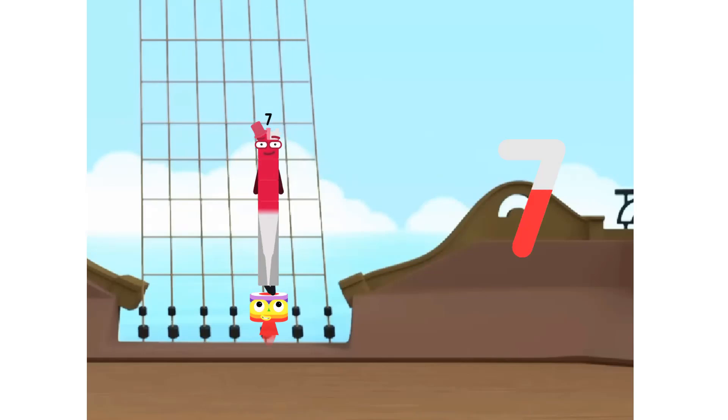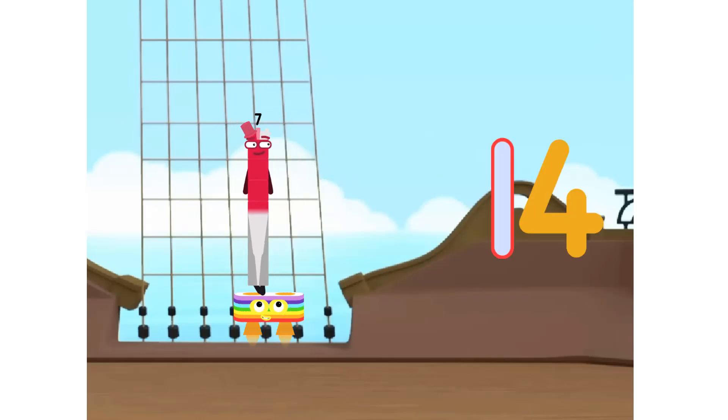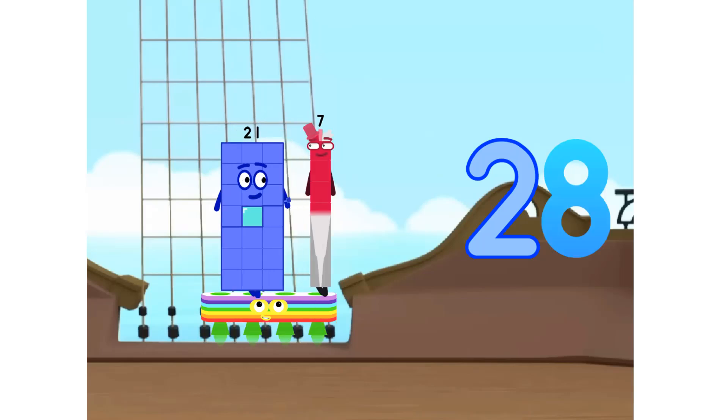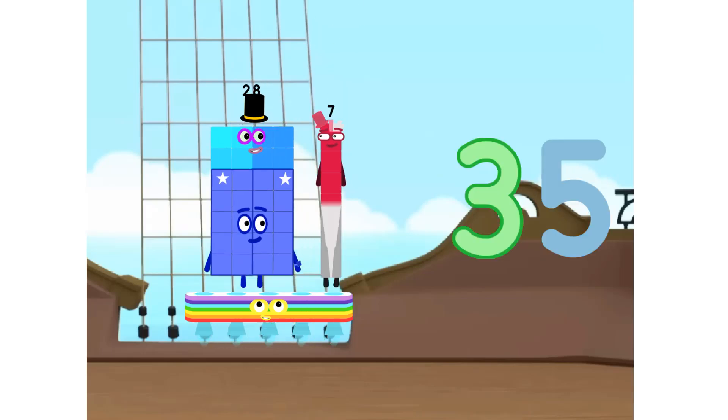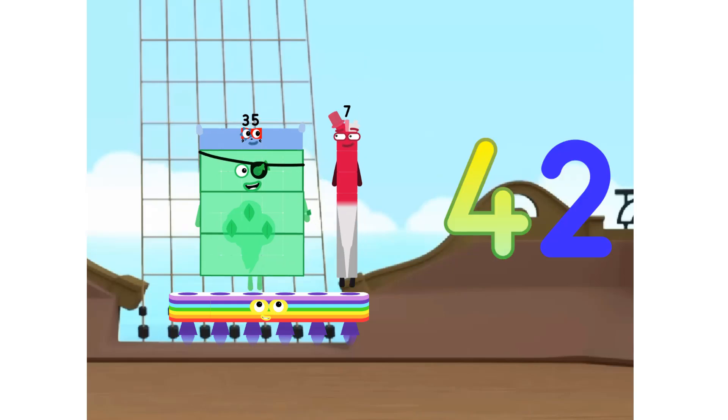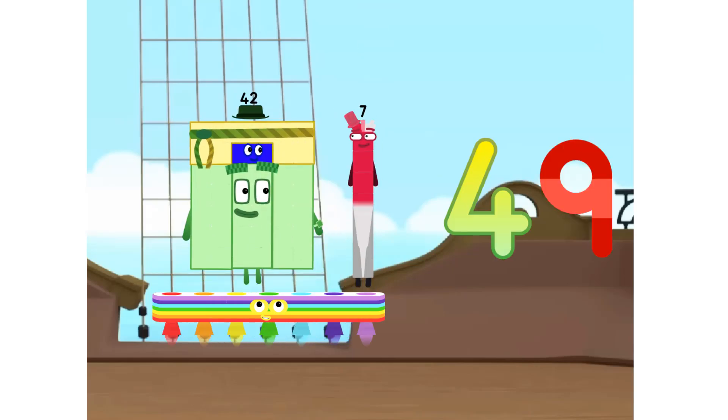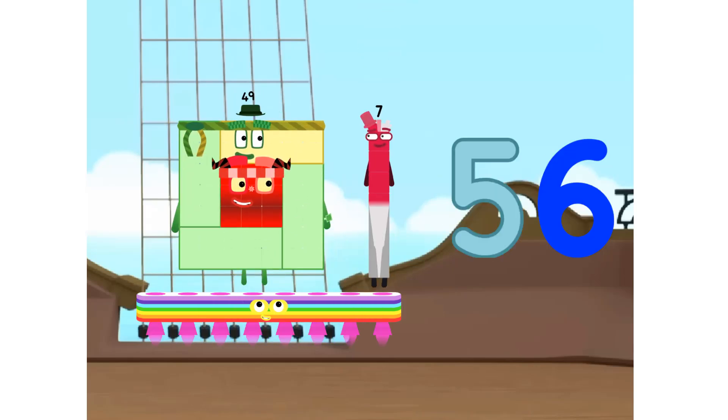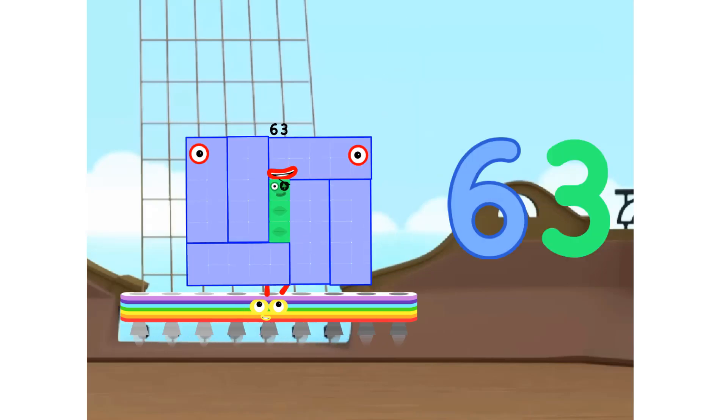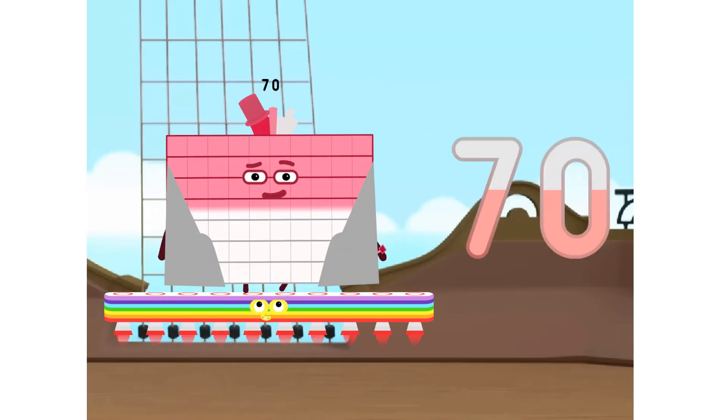1 seven is 7. 2 sevens are 14. 3 sevens are 21. 4 sevens are 28. 5 sevens are 35. 6 sevens are 42. 7 sevens are 49. 8 sevens are 56. 9 sevens are 63. 10 sevens are 70.